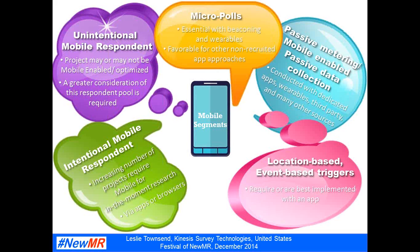The fifth segment I think of as micro-polls. I'm going to be focusing on this area quite a bit in my talk. It's a component of beaconing and wearables, favorable for approaches where the app has some other intention and you're not really recruiting the respondent. As you can see from the chart, all but the purple are really natural migration points for mobile — meaning you don't have any choice but to look outside of what we've considered the mainstream set of solutions that our industry has offered to the mobile world.